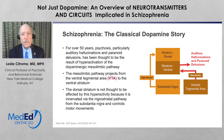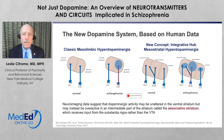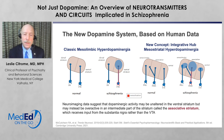Block those receptors, you block those symptoms. However, the story is a bit more complicated. Modern imaging techniques have implicated another pathway — from the substantia nigra to something we call the associative striatum. This has changed the world in terms of how we conceptualize dopaminergic circuitry in human brains.